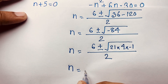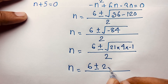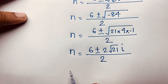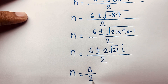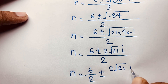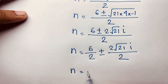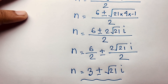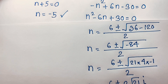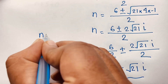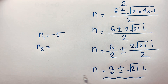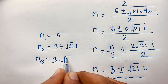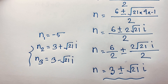Simplifying further, n equals 6, plus or minus 2 times square root of 21 times i, over 2 — since square root of negative 1 equals i, this is a complex solution. Separating the fraction: 6 over 2 plus or minus 2 times square root of 21 times i over 2, which gives n equals 3 plus or minus square root of 21 times i. So our three solutions are: n₁ equals negative 5 (real solution), n₂ equals 3 plus square root of 21 times i, and n₃ equals 3 minus square root of 21 times i (both complex solutions).